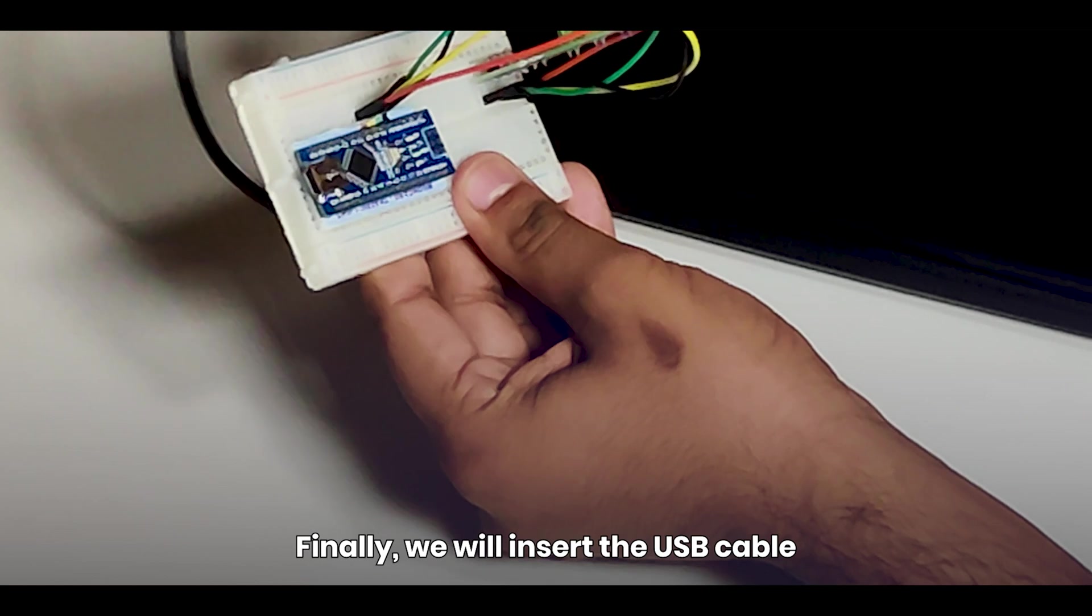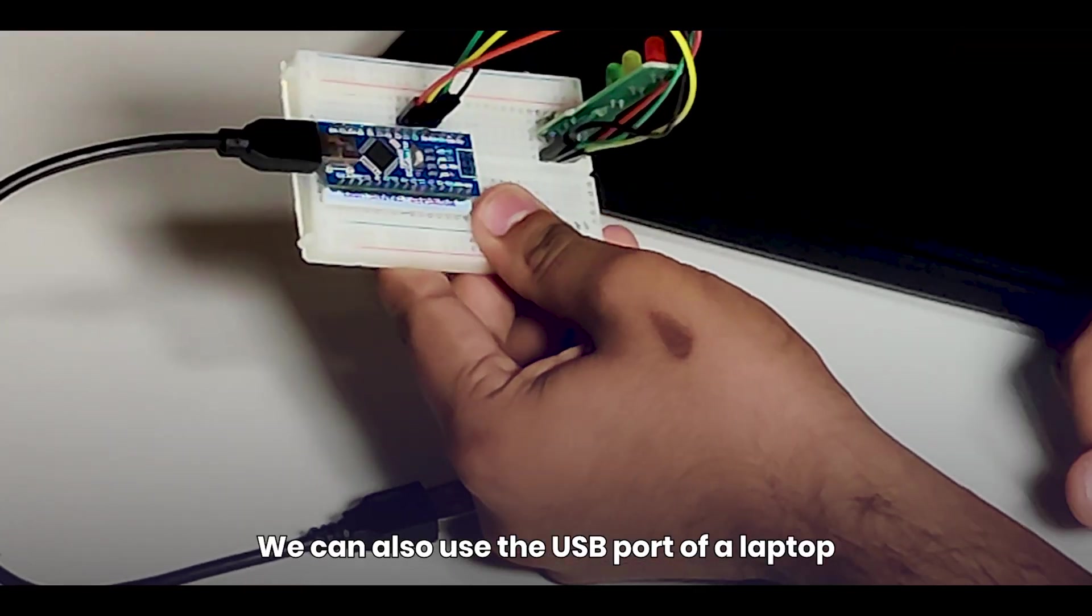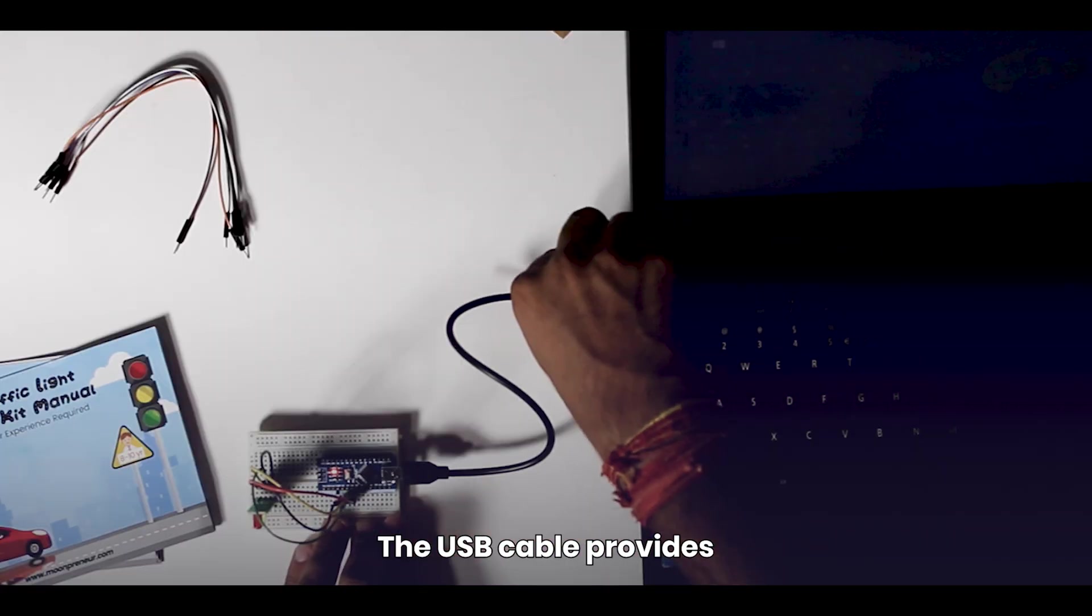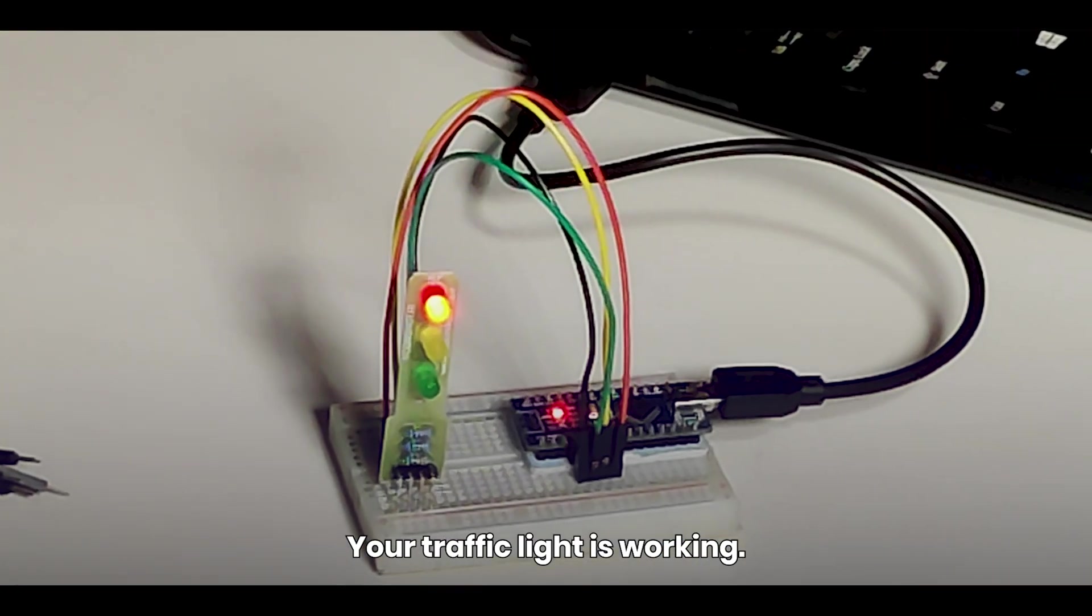Finally, we will insert the USB cable in a USB power adapter. We can also use the USB port of a laptop or computer. The USB cable provides electricity to the board and there you go, your traffic light is working.